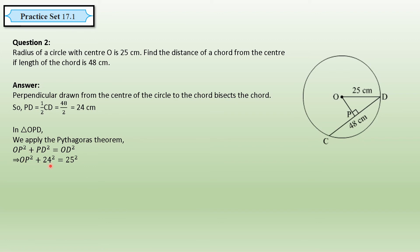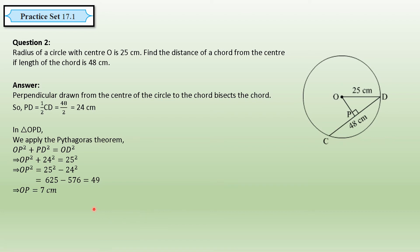Substituting the values: PD is 24, so 24², and OD is the radius 25, so 25². Rearranging: OP² = 25² − 24² = 625 − 576 = 49. Taking the square root on both sides, OP equals 7 centimeters. Therefore the distance of chord CD from center O is 7 centimeters.